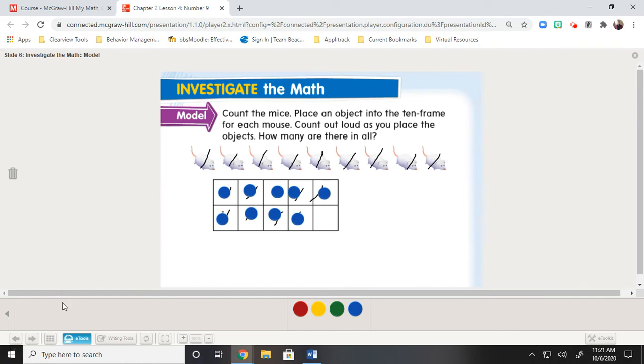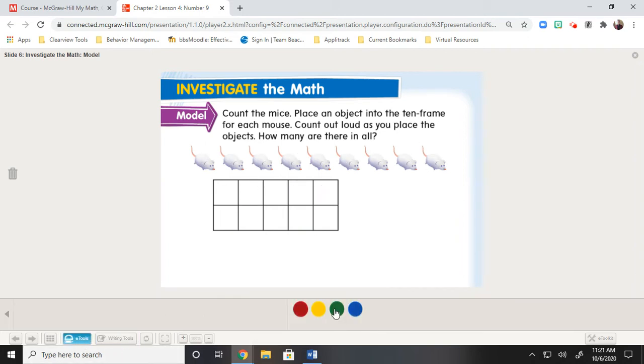Now, the number 9, how do we write that one? Well, it doesn't say how to write it yet, but it says count out loud as you place the objects. How many are there in all? Another thing that you could do is, and I won't do the whole thing, but what you can do is you can take the counters and you could just start by putting them one on top of each object. And then when you get done, you can take that amount of objects and put them in the squares. You see how I'm doing that? Okay. Let's move on to the next page.